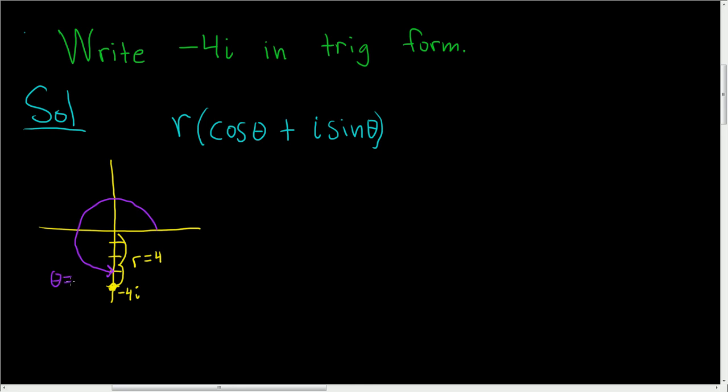So theta is equal to 3 pi over 2. And so now we can go ahead and write the final answer down. So we said r was 4. So 4 parentheses cosine. And we said theta was 3 pi over 2.